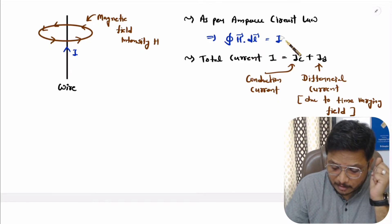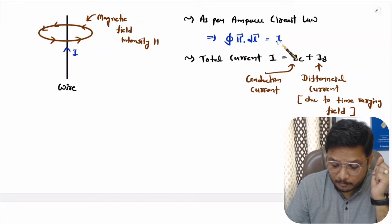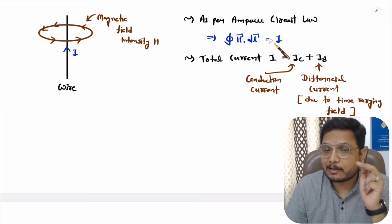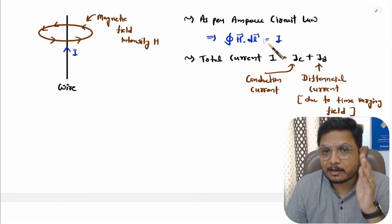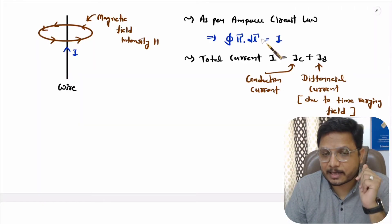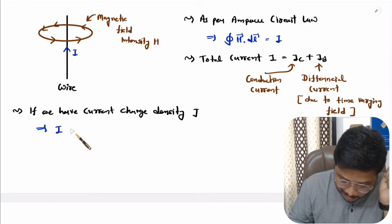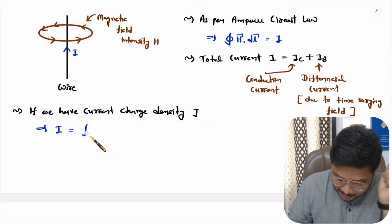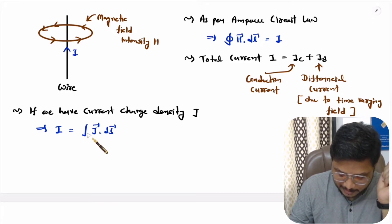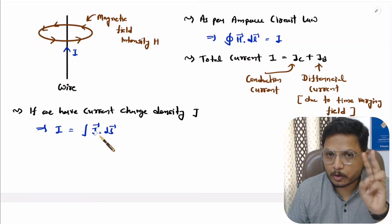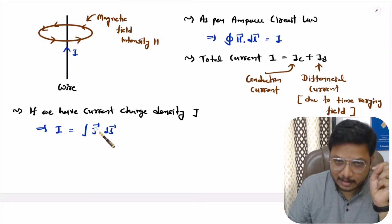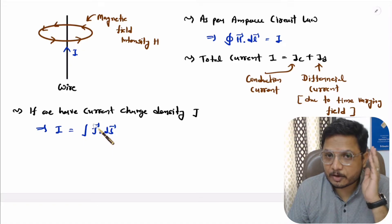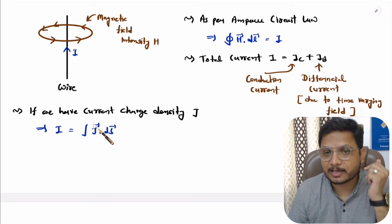Using this equation, we will identify the integral form. The current I can be represented in terms of current charge density J, where current equals the surface integration of current charge density J. The current charge density J can also have two components: Jc corresponding to conduction current and Jd corresponding to displacement current. The displacement current charge density Jd is present due to time-varying fields.